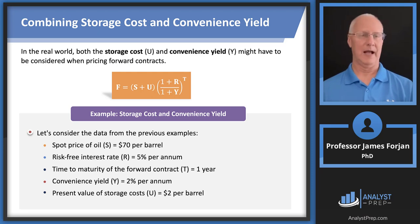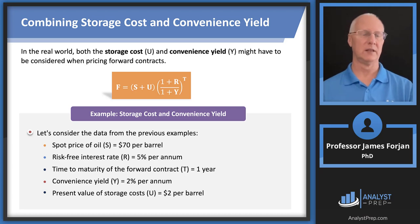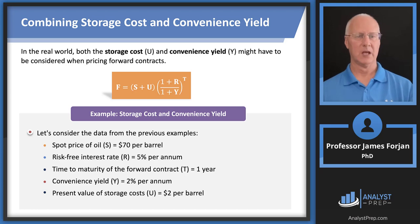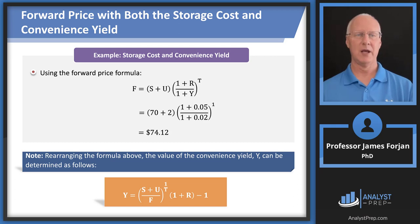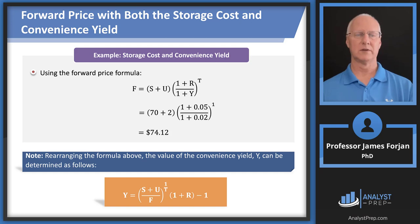Combining both storage costs and convenience yield gives the full cost of carry formula: F = (S + U) × [(1+R)/(1+C)]^T. This is most likely the formula tested on the exam. With the given inputs the answer is $74.12. You can also rearrange the formula to compute the implied convenience yield.